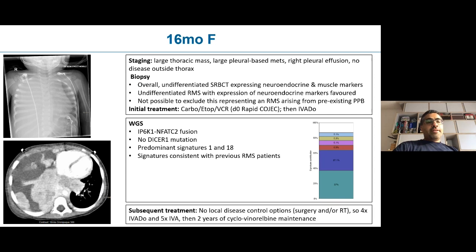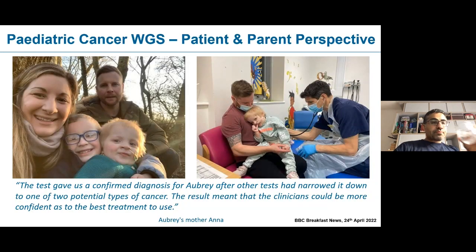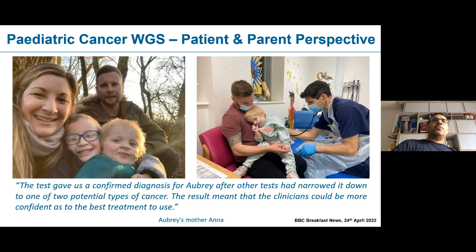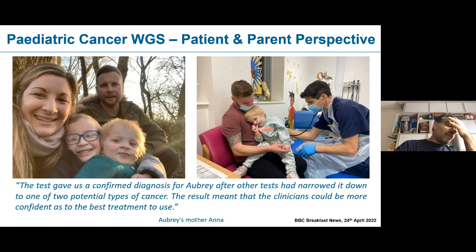On balance, the information helped us say this probably is not a PPB — the most reasonable diagnosis is that it is a funny-looking rhabdomyosarcoma, and the genomic features are consistent with this. Very importantly, with this one-stop assay we could also include and exclude the germline DICER1 mutations. Here is a wonderful picture of the child, Aubrey, with my colleague Mary. The quote reads: 'The test gave us a confirmed diagnosis for Aubrey after other tests that had narrowed it down to one of two potential types of cancers, meaning the clinicians could be more confident as to the best treatment to use.' That's really so very important — giving chemotherapy without a diagnosis is really very difficult to do, and whole genome sequencing has helped us resolve some of those issues.